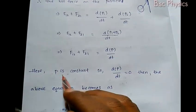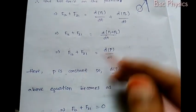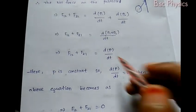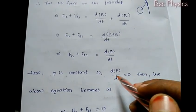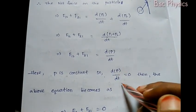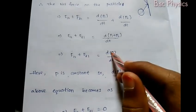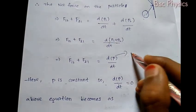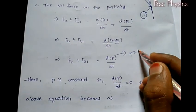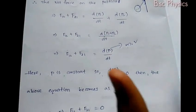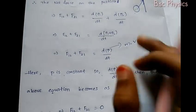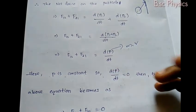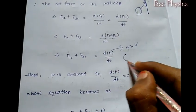Since momentum P is constant for an isolated system, dP/dt equals zero. Therefore mass times velocity is constant, which gives us F12 plus F21 equals zero.